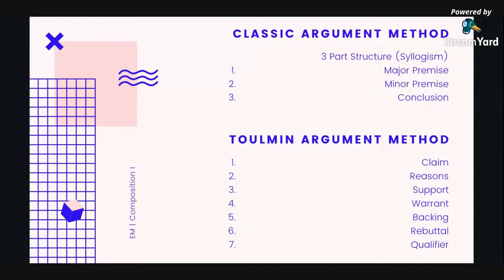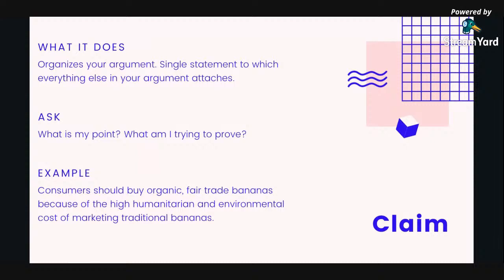We'll go through each of those to learn what they are and how you form them. The different pieces of the Tolman method are: claim, reasons, support, warrant, backing, rebuttal, and qualifier.